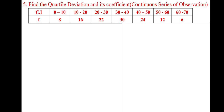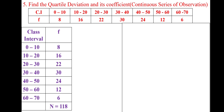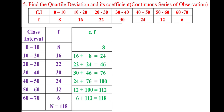I am taking this problem. It is a continuous series of observation. We know very well how to solve this problem based on median concepts. The given problem will be written in vertical form, then we need to find cumulative frequency. 8 is written as it is; 16 plus 8 equals 24; 22 plus 24 equals 46; 30 plus 46 equals 76; 24 plus 76 equals 100; 12 plus 100 equals 112; 6 plus 112 equals 118. So total frequency and cumulative frequency of the last value will be the same.